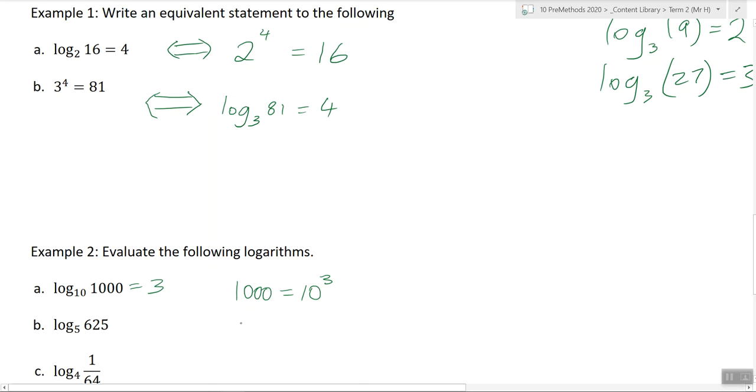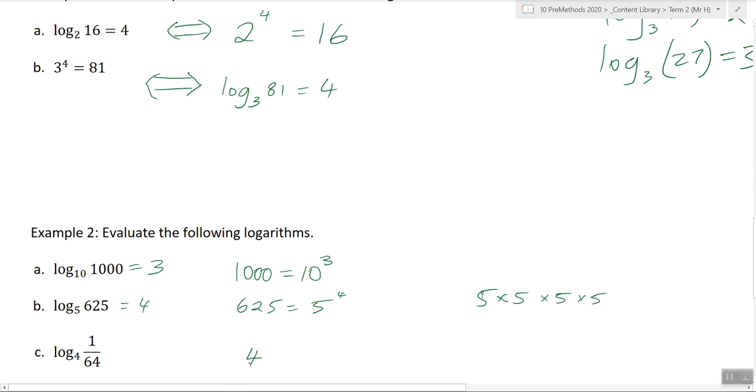Next one. We have six hundred and twenty-five. So the base is five. So what power do we put five to to get six hundred and twenty-five? Five times five is twenty-five. Times five is one hundred and twenty-five. Times five is six hundred and twenty-five. So we have four.